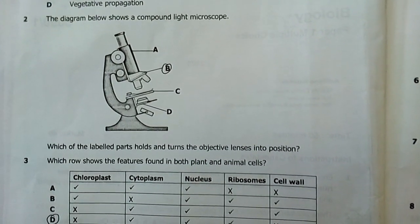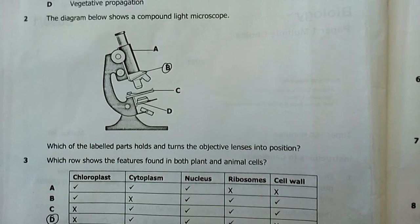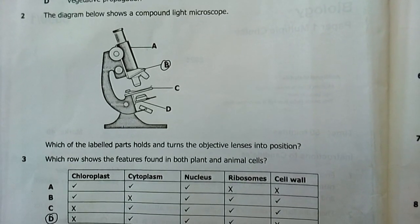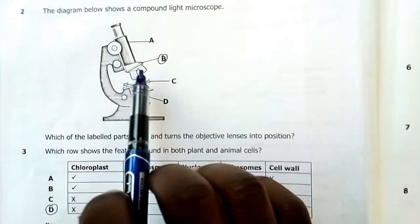Two, the diagram below shows a compound microscope. Which of the labelled parts holds and turns objective lenses into positions? B, the revolving nose piece.